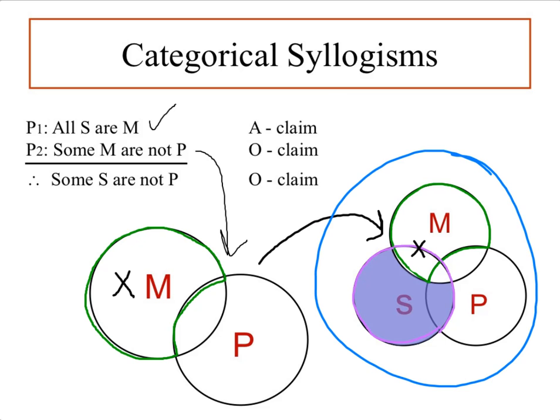Now let's evaluate it to determine validity. If the conclusion — some S are not P — were true, we'd have an X in the orange region, in the S class that's outside of the P class. But the X is not there; it's on the line of the S category. And so this argument is invalid.